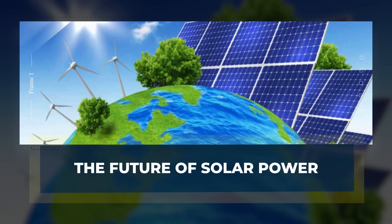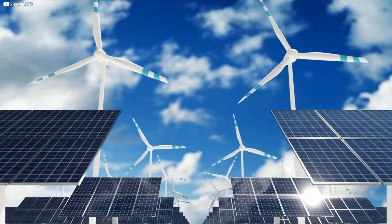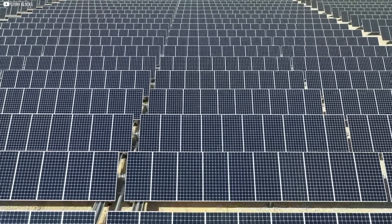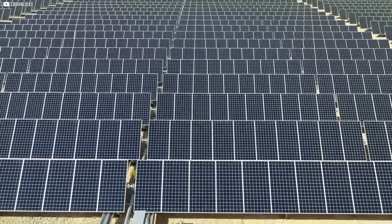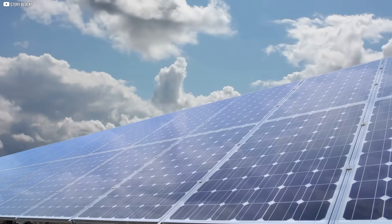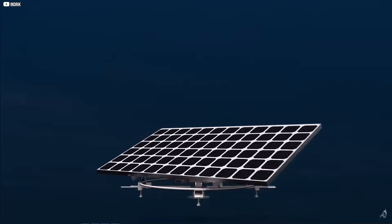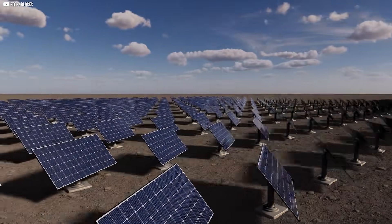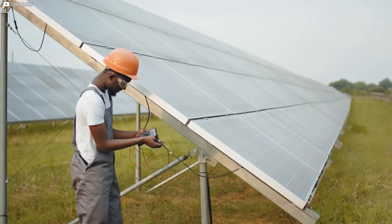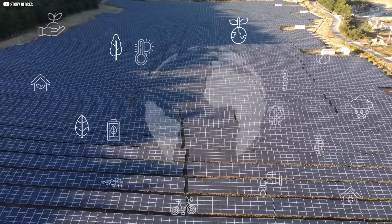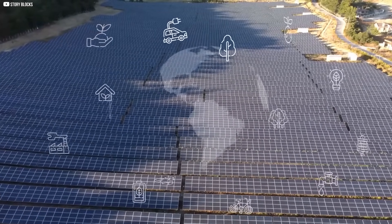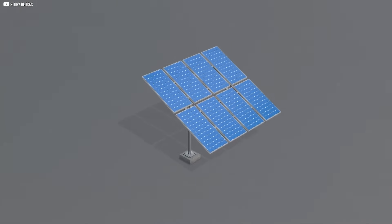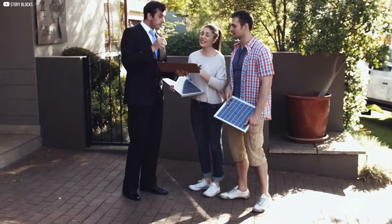The future of solar power is bright, especially with the introduction of Fibonacci panels. These panels have the potential to revolutionize how we harness solar energy, bringing a fresh approach to an age-old energy source. By applying the Fibonacci sequence to solar panel design, we are not only increasing energy output, but also reducing installation and maintenance costs. This approach could lead to a drastic reduction in the overall cost of solar energy systems, making solar power more accessible to a wider audience and more affordable for homeowners and businesses alike.